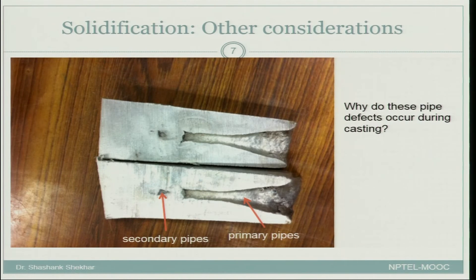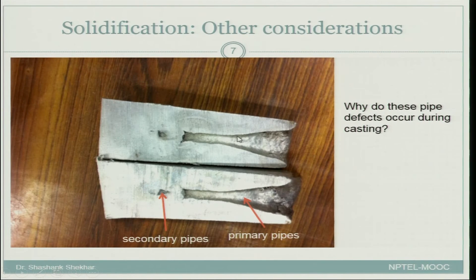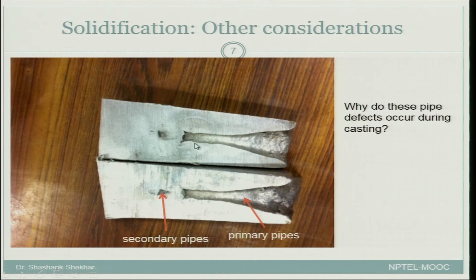The riser and sprue should solidify last because they act as a reservoir to supply liquid after shrinkage occurs, which leads us to another important aspect of solidification: shrinkage. In lab experiments, what is observed is a primary pipe and a secondary pipe — defects generated during solidification due to shrinkage. The primary pipe is intuitively understood, but the secondary pipe — enclosed by solid on the outside with a cavity inside — is less obvious.